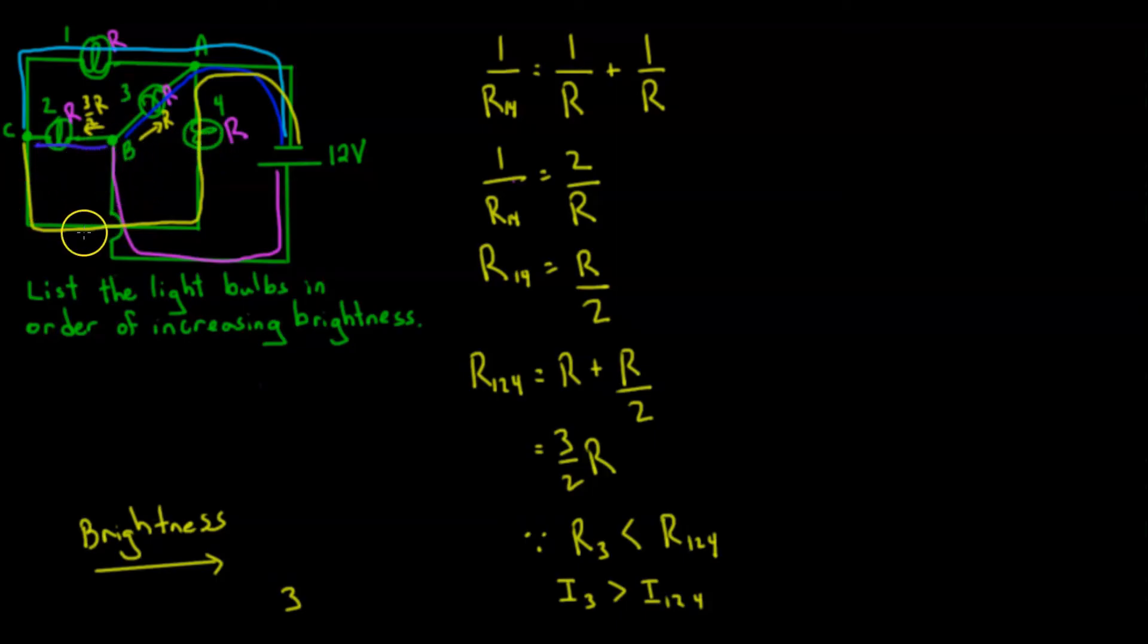Alright, we still have three more bulbs to put in here: 1, 2, and 4. Well, if we look at the current that comes over here and turns to the left, the current first goes through bulb 2. Let's call that current I_2, and then it splits.